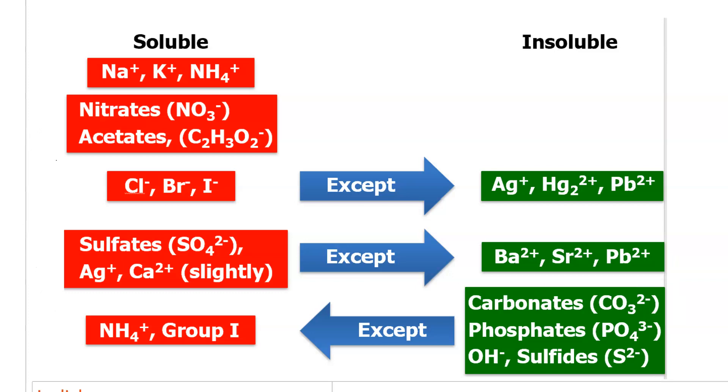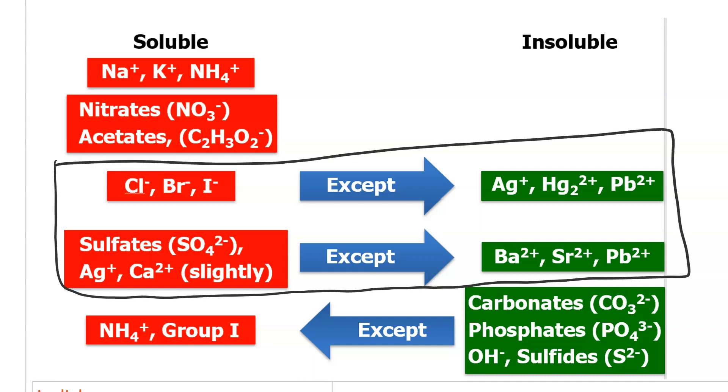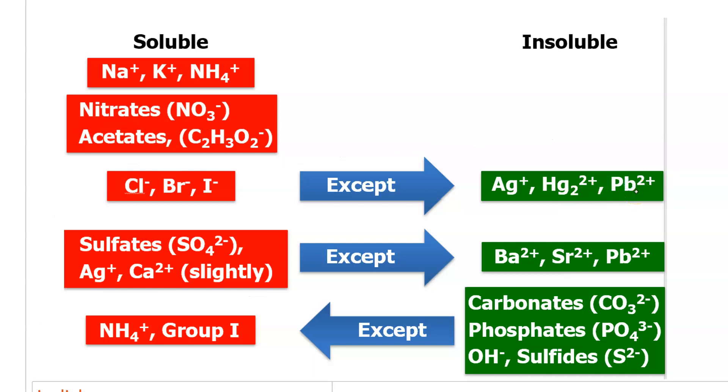And then, of course, it becomes tricky when you're in the middle here, category 2. If your anion is chloride, bromide, or iodide, these are soluble, unless the cation is silver, dimercury, or lead, too. So, calcium chloride is soluble, but silver chloride is insoluble.